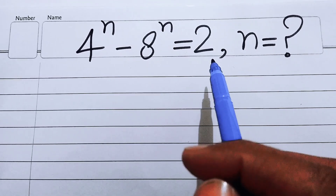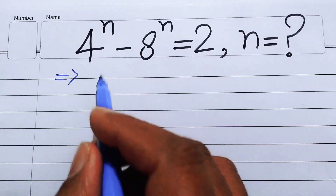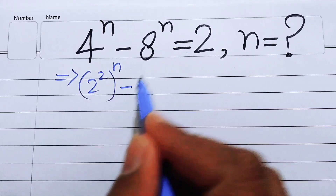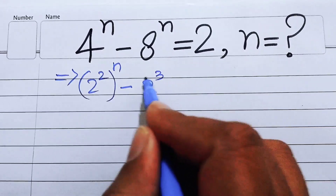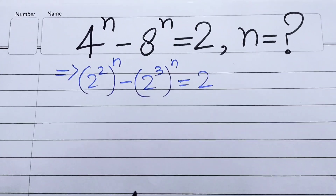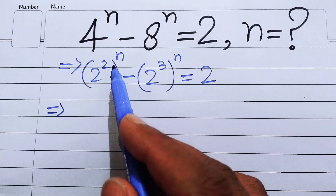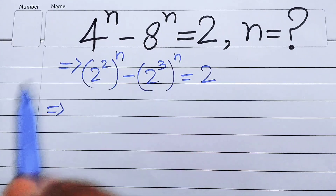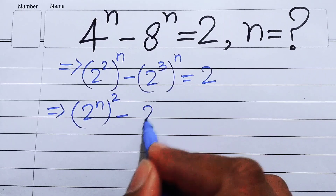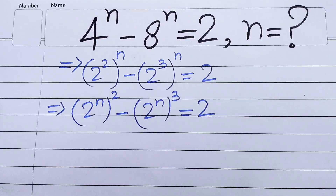The very first thing we do is rewrite this equation. We write 4 as 2 squared and its whole power n, minus 8 written as 2 cubed and its whole power n, equals 2. In the next step we interchange these two exponents and write it as 2 to the power of n, whole squared, minus 2 to the power of n, whole cubed, equals 2.